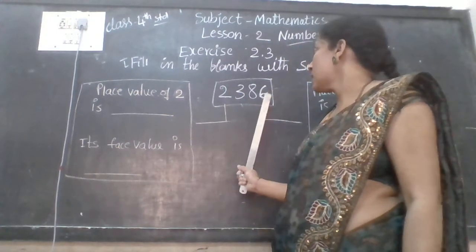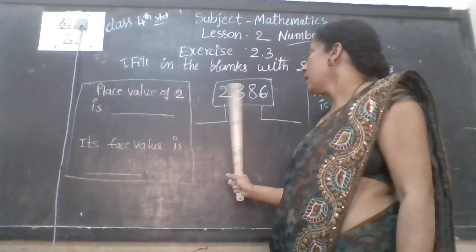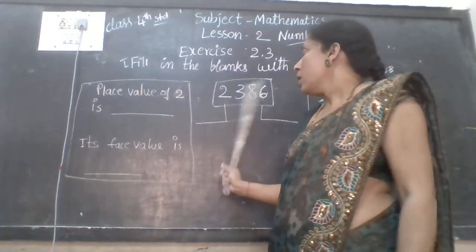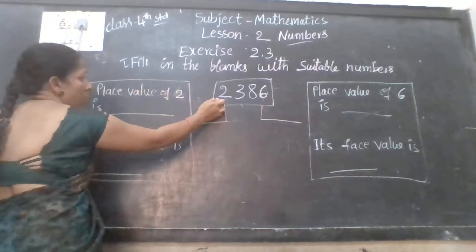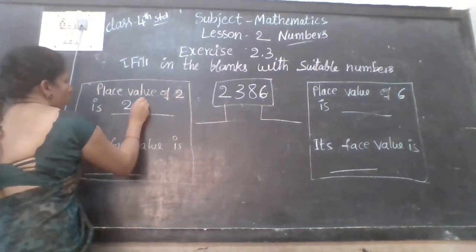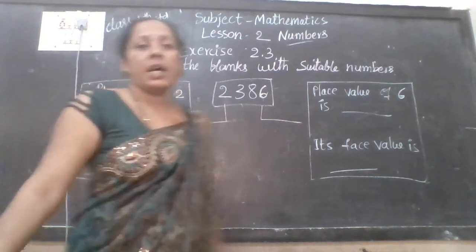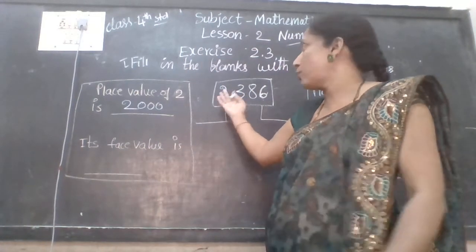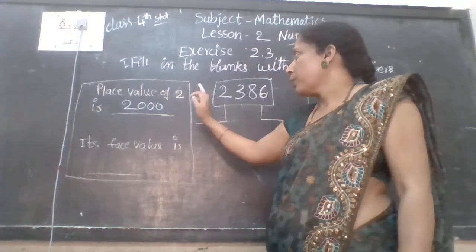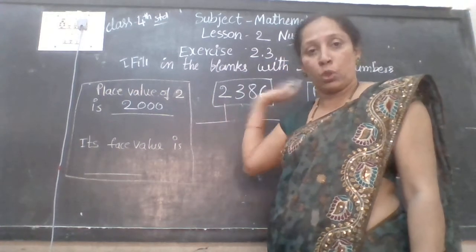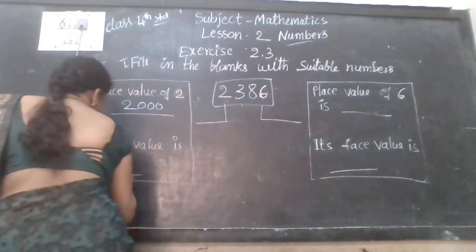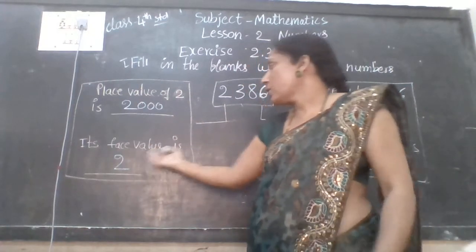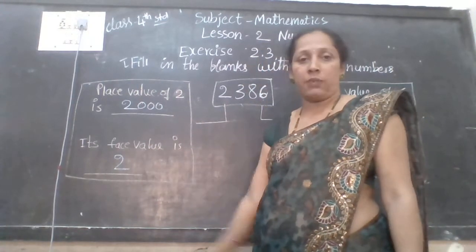Where is 2? 2 is in which place? 2 is in the thousands place. So it becomes 2,000. Place value of 2 is 2,000. Its face value is dash — what is the face value of 2? Place value of 2 is 2,000, its face value is 2.